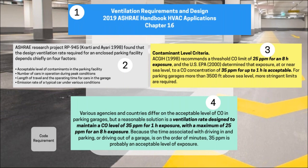The ventilation requirements are in the ASHRAE Handbook Applications Chapter 16. A research project completed in 1998 identified four key factors in determining effective ventilation requirements: the acceptable level of contaminants, the number of cars in operation during peak hours, the length of travel and operating time for cars while in the garage, and the emission rate of typical cars under various conditions - because emission rates vary from a cold start versus a warm start vehicle. Based on that, an additional study identified the design goal should be 25 parts per million for an eight-hour exposure, or 35 parts per million for up to one hour.